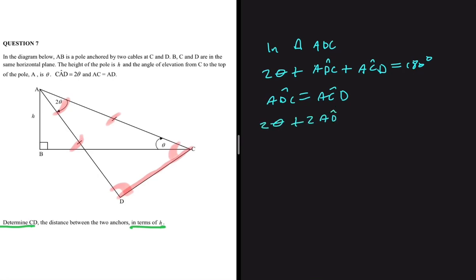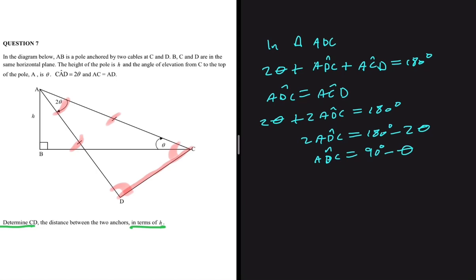So now we have 2θ plus 2·ADC equals 180 degrees. Therefore 2·ADC equals 180 minus 2θ. Dividing both sides by 2, we get ADC equals 90 degrees minus θ. So this angle here is 90° − θ, and this angle is also 90° − θ. Let's not forget our aim: we want to determine DC in terms of h.